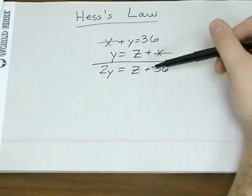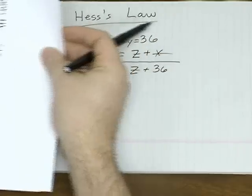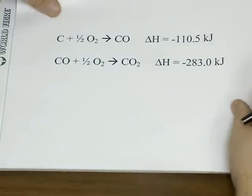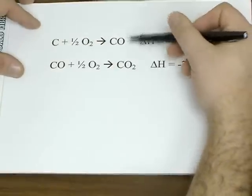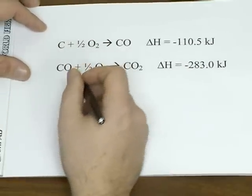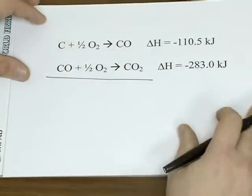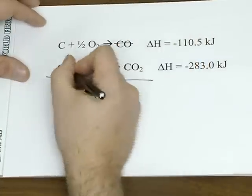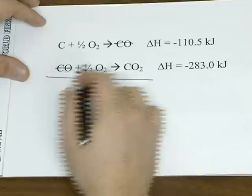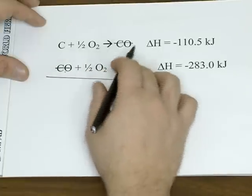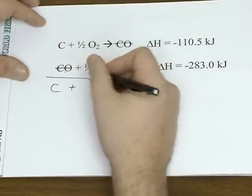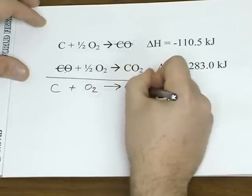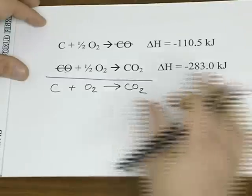Hess's Law does the same sort of thing but instead of working with algebra equations we use that trick with chemical equations. For example, you can take these two equations and if you add them together like the X's did a minute ago, carbon monoxide is going to cancel out because it's a product in one or a reactant in the other. You add everything else down you get carbon, half and a half gives you 1O2 produces CO2.